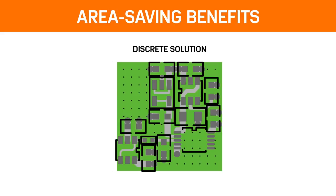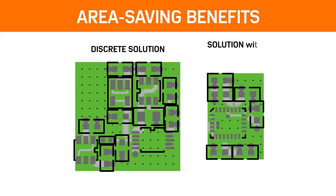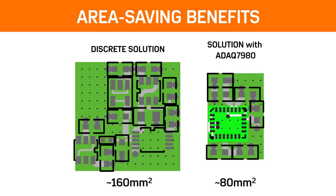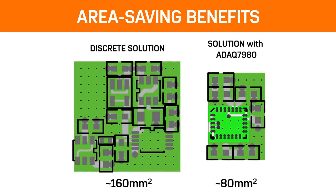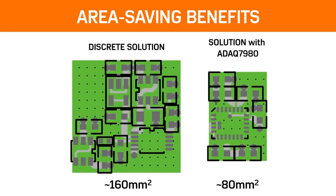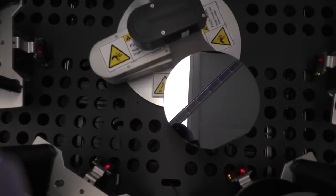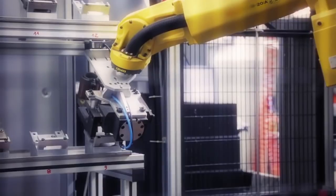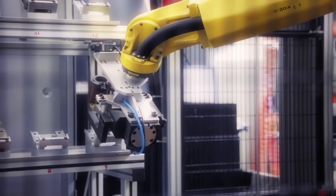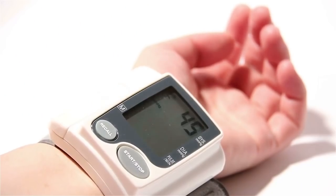Compared with traditional signal chains featuring the same blocks, the ADAQ7980 can provide PCB area savings greater than 50%. This is extremely critical for today's ever-increasing signal chain density. This level of system integration solves many design challenges, yet is flexible enough to adapt to a wide array of applications, such as automated test equipment, machine automation, and industrial and medical instrumentation.